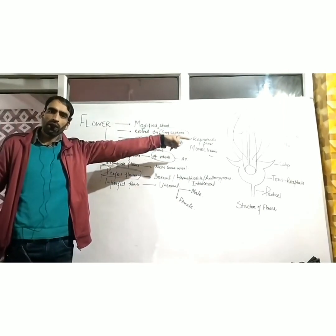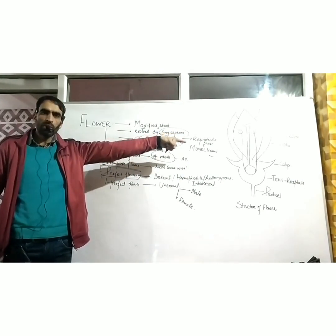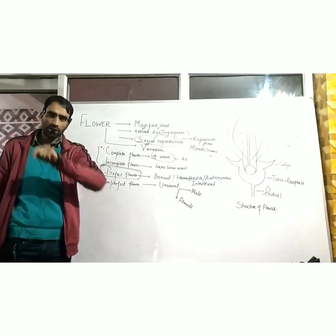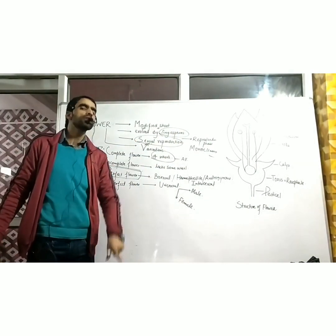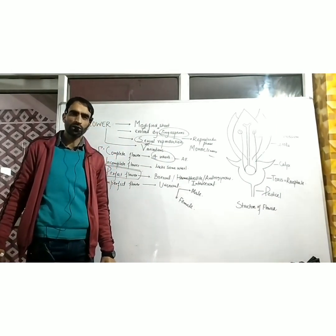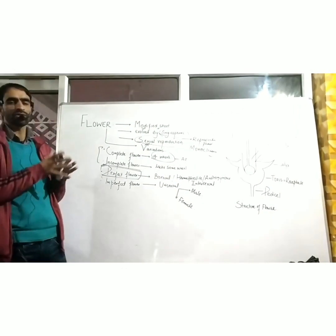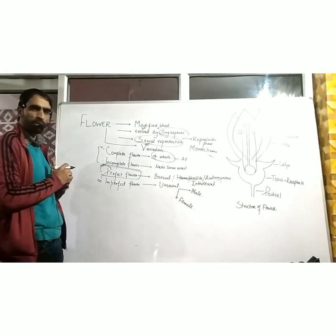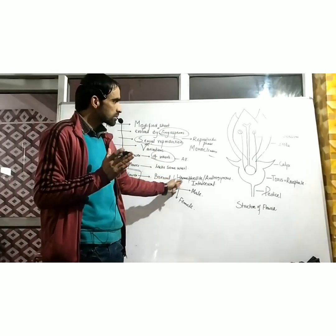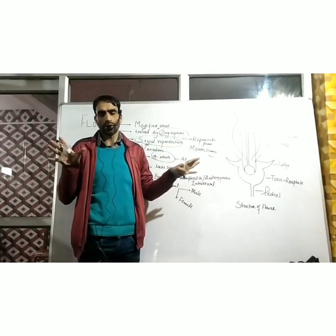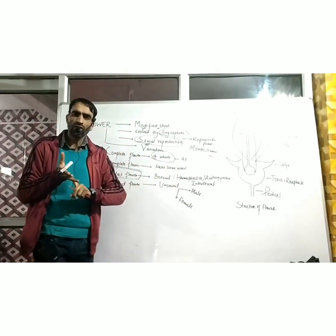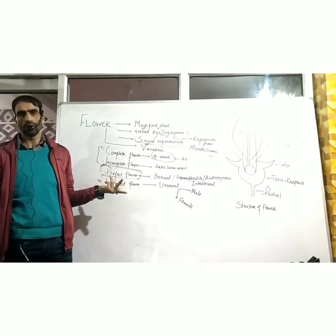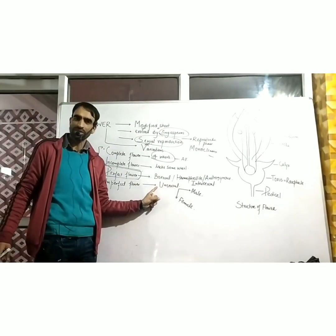A flower which has both reproductive whorls is a perfect flower. For example, a rose flower — it has both androecium and gynoecium — it is a bisexual flower and a perfect flower. An imperfect flower, on the other hand, is one which lacks either androecium or lacks gynoecium. That flower which is missing one of these two reproductive whorls is called an imperfect flower. That means an imperfect flower is basically unisexual — one sex only.